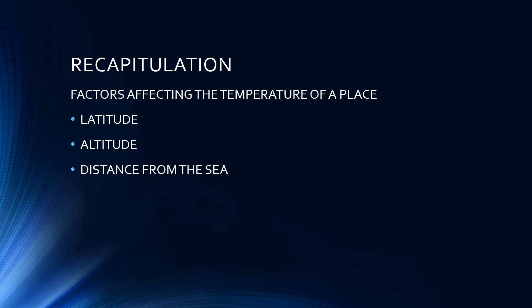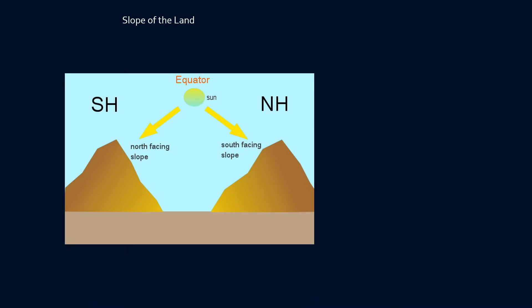Today we will be studying about the remaining factors. The next factor is the slope of the land. The relief features also have a very important influence on the temperature of a place, and the slope of the land also influences the temperature to a great extent. An area with steep slope has more rapid change in temperature than a gentle one, and we will study about this effect in terms of the alignment.